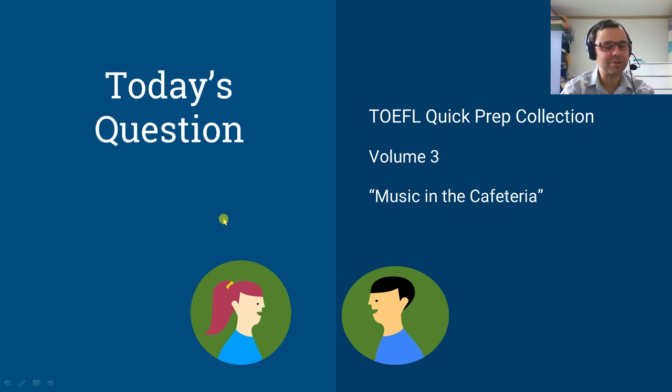So let's get started. Today, as a sample question, I'm using something taken from the TOEFL quick prep collection. Specifically, this is from volume 3 of that collection. It's the question about music in the cafeteria. Now, I'm not allowed to give you the question here in the video, but the good news is, if you Google TOEFL quick prep collection, it will be the first result. You can download a PDF file that has a complete transcript as well as MP3 files of all the audio stuff.